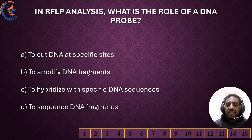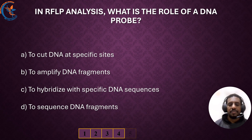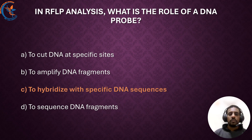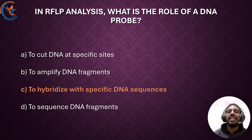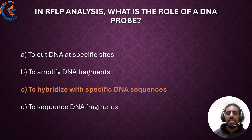In RFLP analysis, what is the role of a DNA probe? DNA probes are used to hybridize with specific DNA sequences on a membrane, allowing for detection of particular fragments in Southern blotting. So the correct answer is: to hybridize with specific DNA sequences.